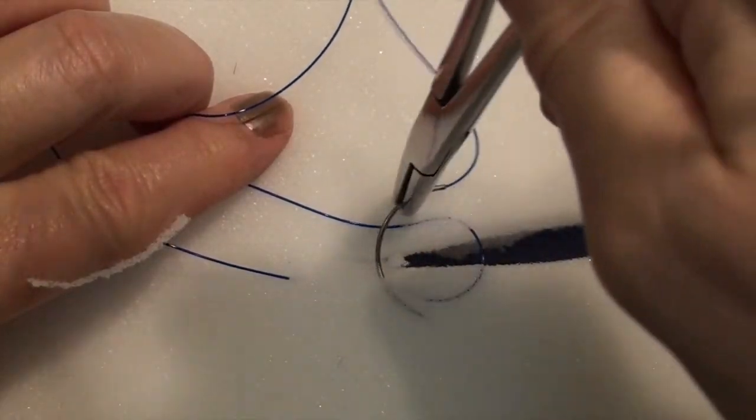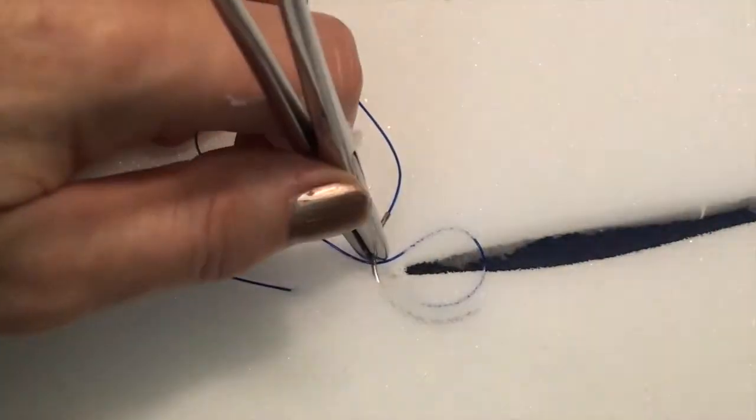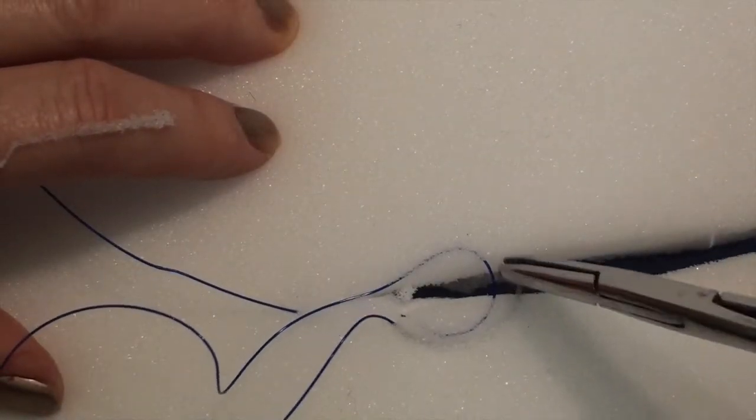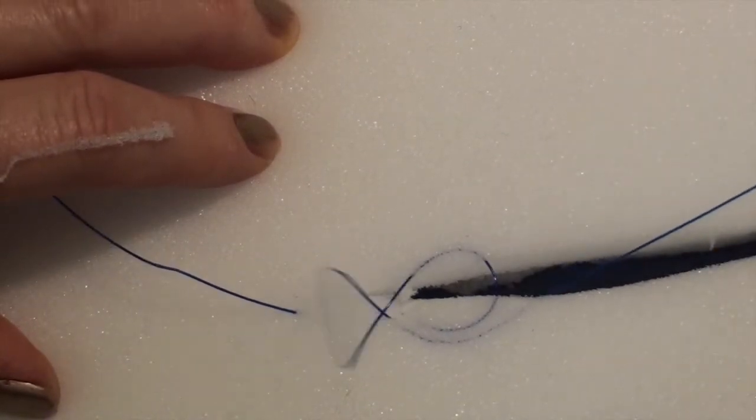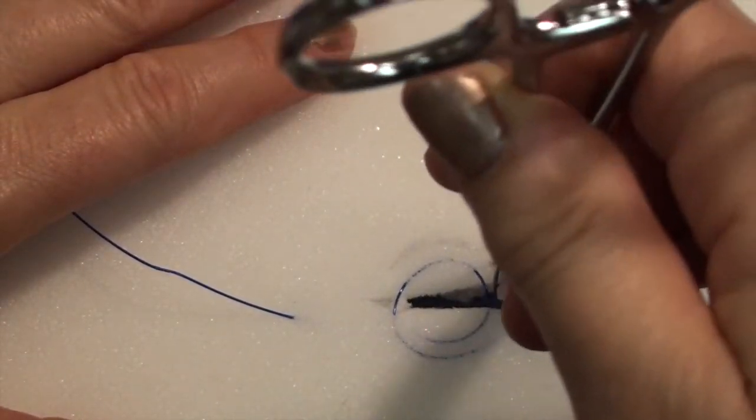Now create a second mattress suture on the outside of the first one. Essentially you're going to have a small horizontal mattress stitch encased inside a larger horizontal mattress stitch.